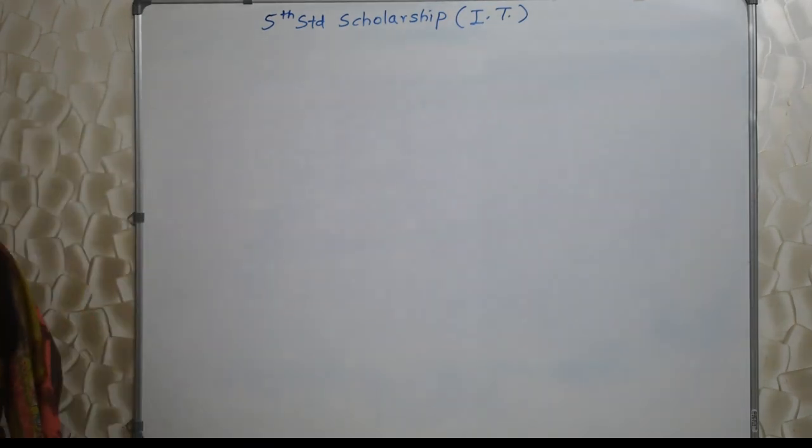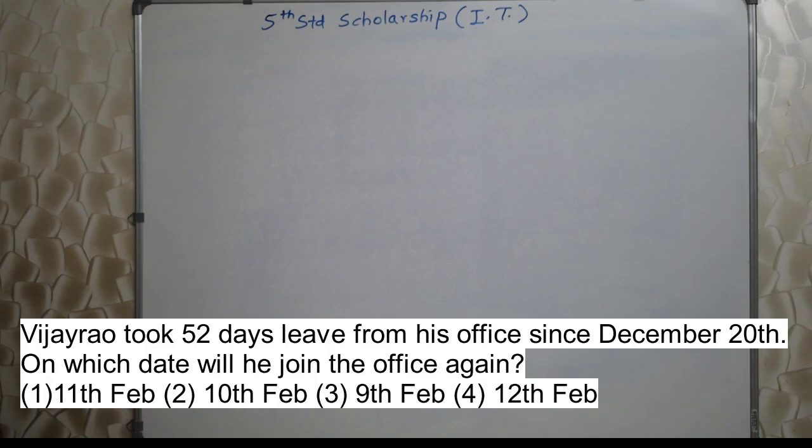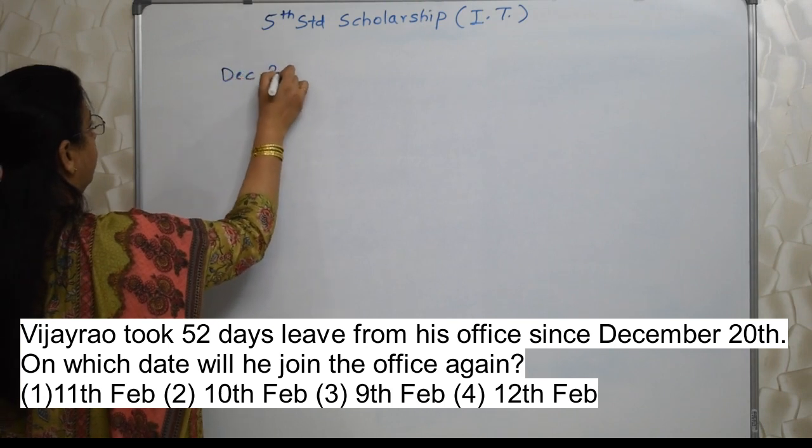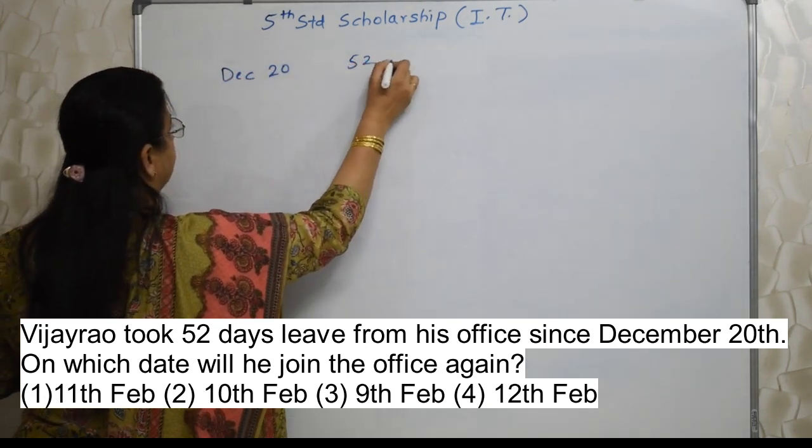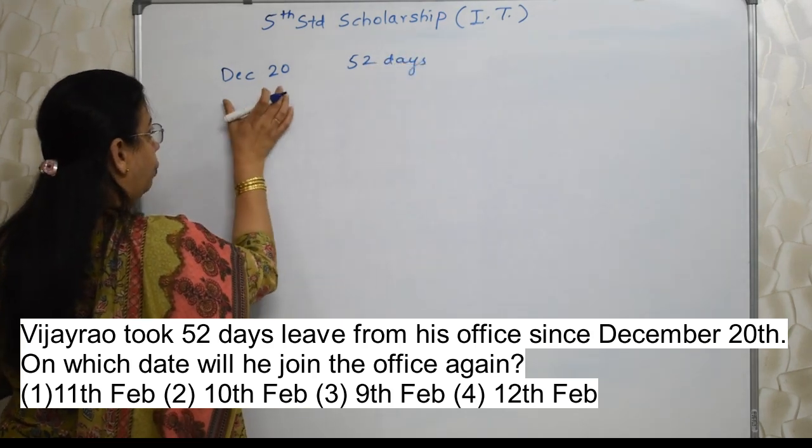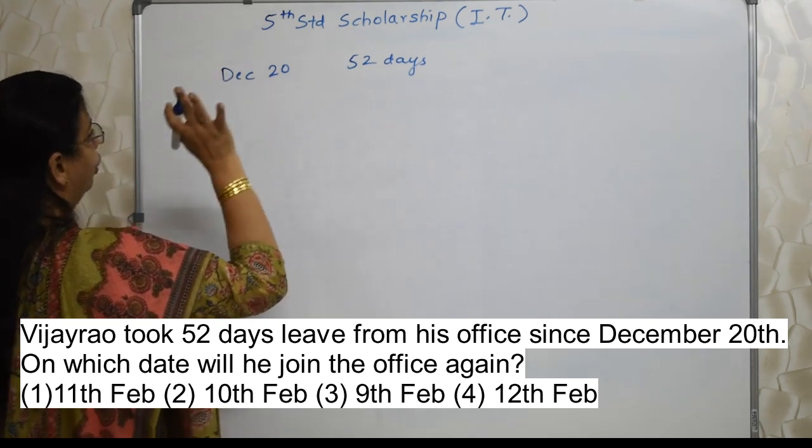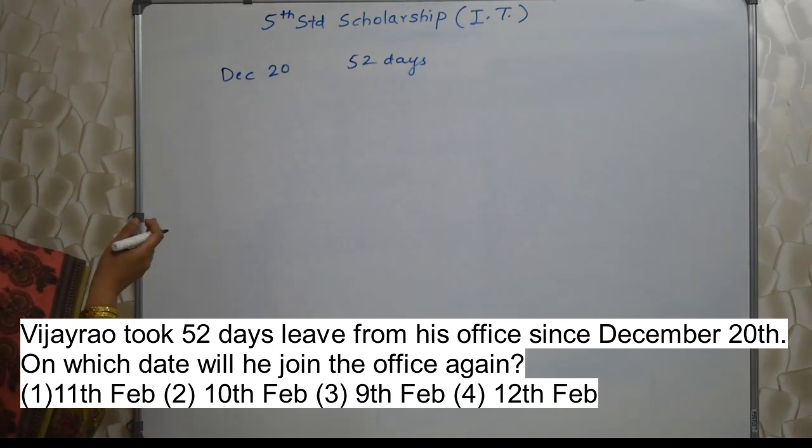The first sum will appear on your screen. Vijay Ram took 52 days leave from his office since December 20th. On which date will he join the office again? Here you are supposed to read the sum properly. Whether they are asking the date on which he will join the office or the last day of the leave. From which day is he going on leave? All these things matter a lot because that will decide whether you are going to get the correct answer or not.